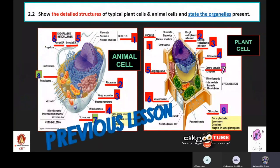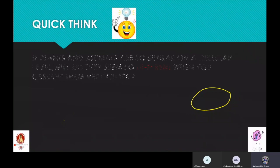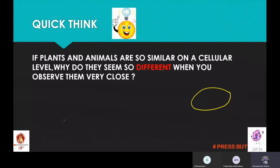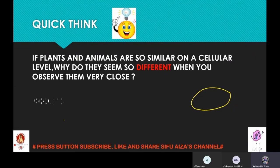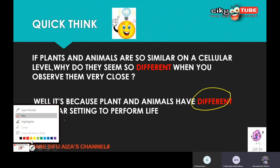By observing the generalized view of diagram for both, I want to have a quick question. If plants and animals are so similar on a cellular level, why do they seem so different when you observe them very close? Anyone? Because they have different life function.